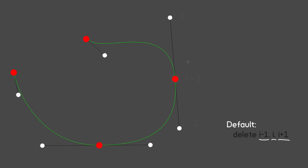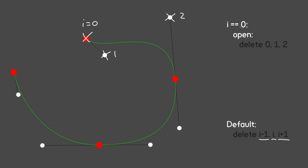There are of course exceptions to this default case. Say we want to delete the first anchor point with an index of 0. For an open path, we'll want to delete its single control point as well as the first control point of the next anchor point — so we're deleting points 0, 1, and 2. The rule is: if i equals 0 and it's an open path, delete points 0, 1, and 2.